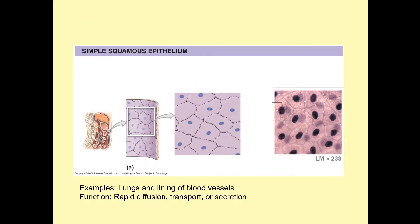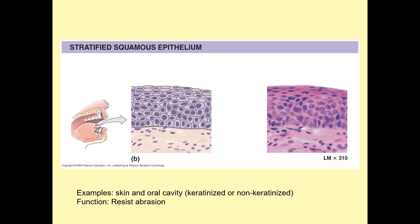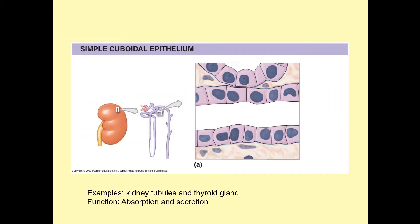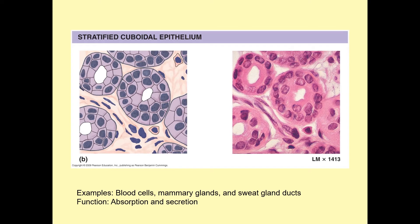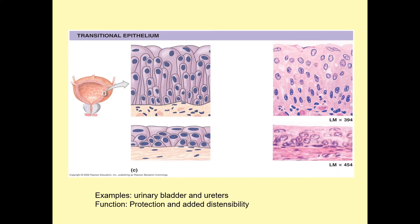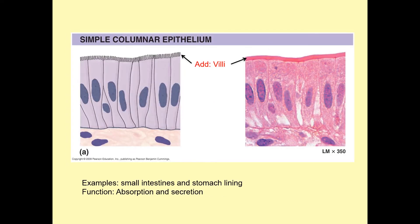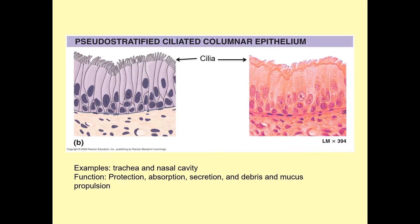Here are examples: stratified squamous epithelium, simple cuboidal epithelium, stratified cuboidal epithelium. Transitional epithelium is tissue that can be stretched. Simple columnar epithelium has villi at the top layer — those are little finger-like projections that increase surface area. We have pseudostratified ciliated columnar epithelium, which looks like it should be stratified in some portions, but some cells go all the way down to the basal surface, so it's pseudostratified, and it has cilia on top.